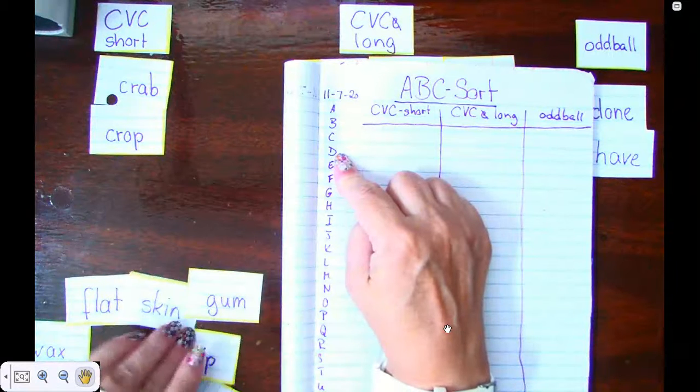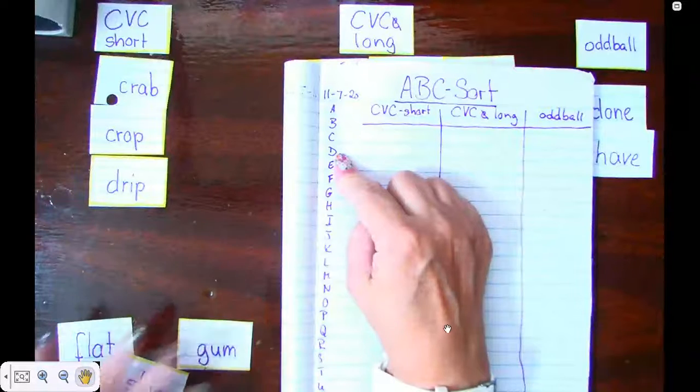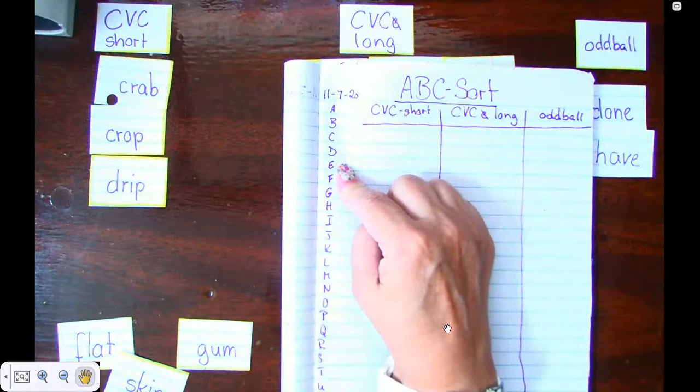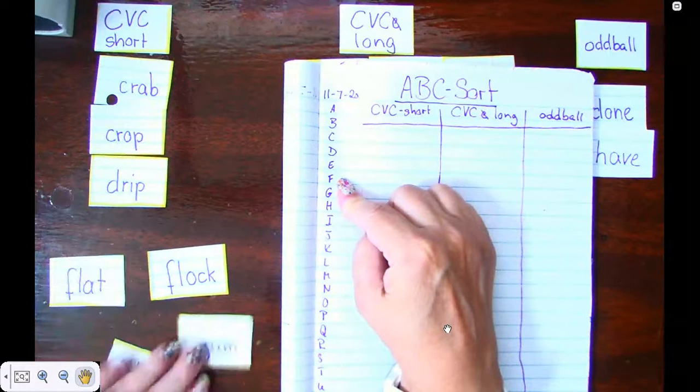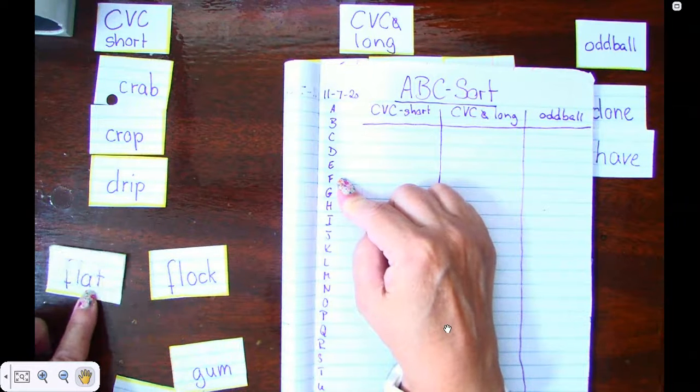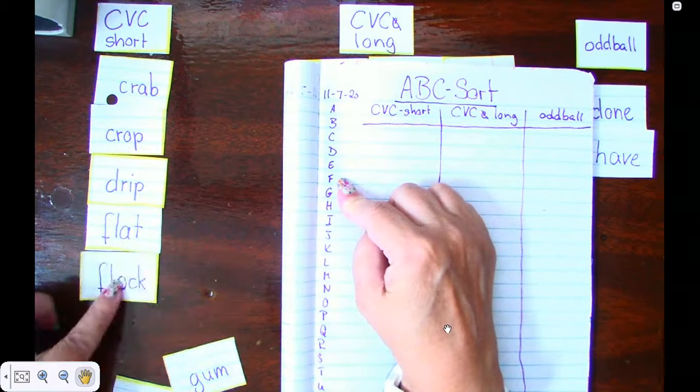Then I'm looking, yep I have one with a D, my drip. Then I have none with the E but I have flock and flat. Oh look, FL FL, so the third letter is A or an O. A comes first so this is how they go.